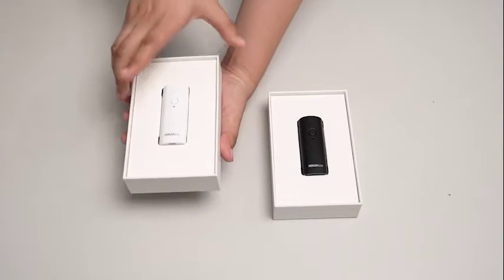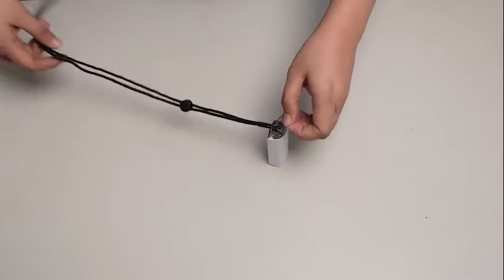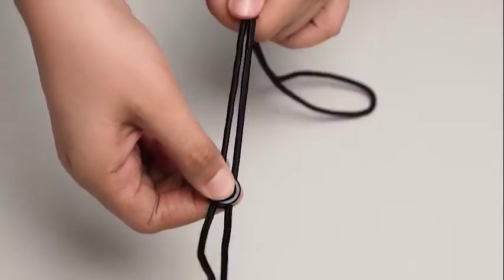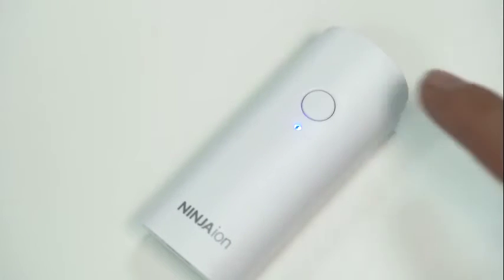Now, let's learn how to assemble and use it. First, attach the lanyard on the device. You can adjust the bead of the lanyard based on your own preference. Then, press the device on-off button. The device starts working when the indicator light is on. Press the on-off button again to turn off.